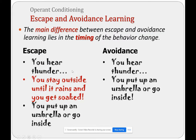Another example: escape — you hear thunder outside. We've all been there. You stay outside thinking it'll be okay, it's not raining yet. Then you get soaked — it rains sooner than you think, you're caught, you're cold, you're wet, you're uncomfortable. It doesn't matter if you put up an umbrella or go inside; you're already feeling that way. But after a while, next time you hear the thunder, you go inside. The main difference is the timing — one, you're escaping when you feel it; the other, you're avoiding it prior to that stimulus.